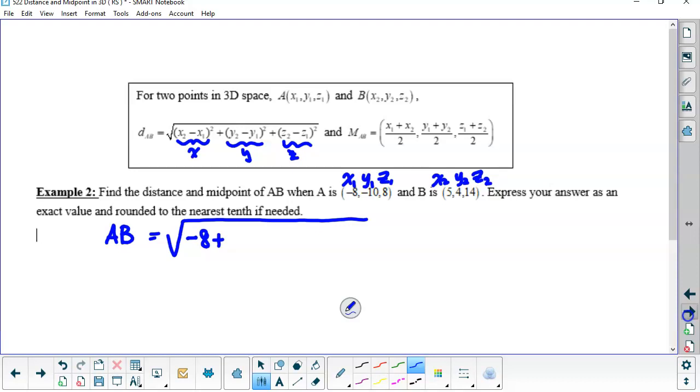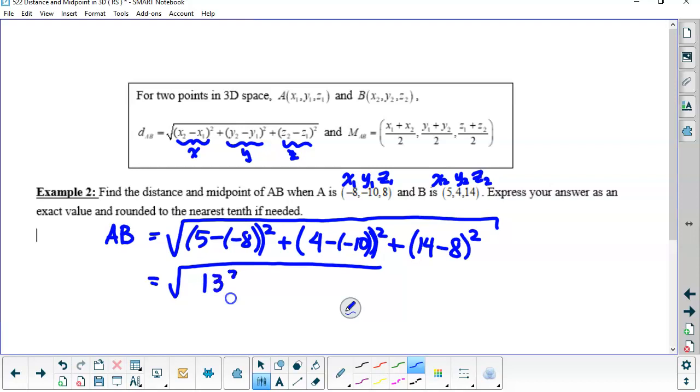So negative eight. I want to do X2 minus X1. So that's going to be 5 minus negative 8 squared plus 4 minus negative 10 all squared, plus 14 minus 8 all squared.